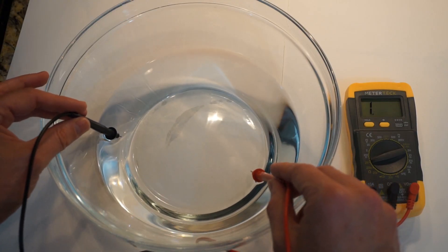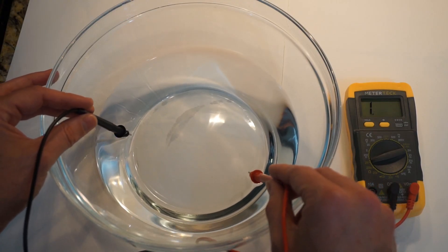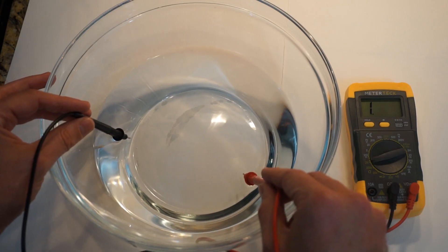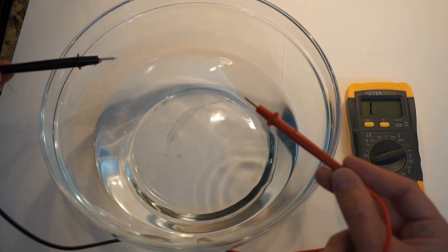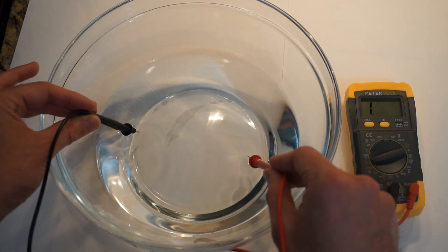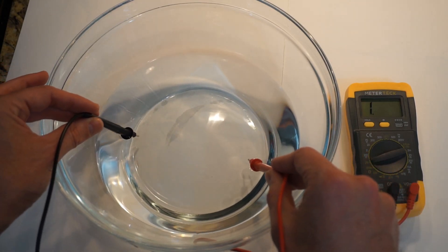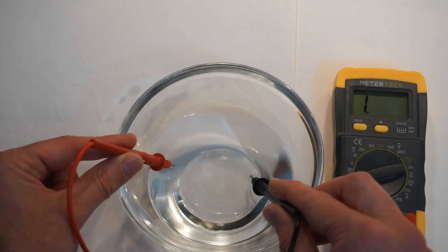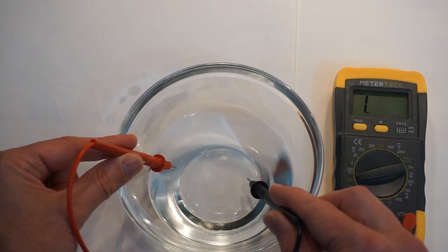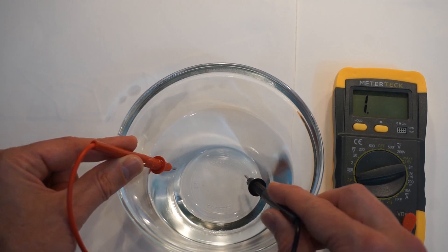That's a lot more resistive. It's greater than I don't even know what it can read, but it's essentially no different whether it's in the air or in the water. So no electricity can pass through here. This DI water has a very high resistance, higher than I can even read on my ohm meter here.